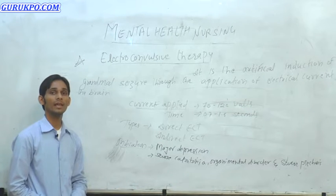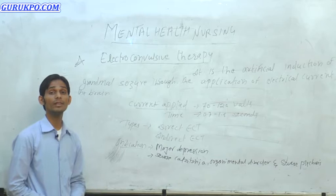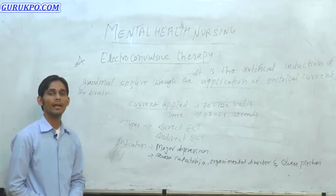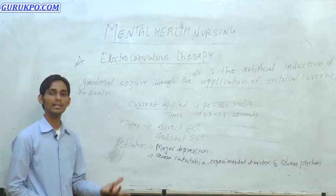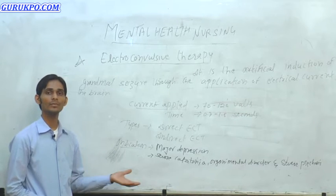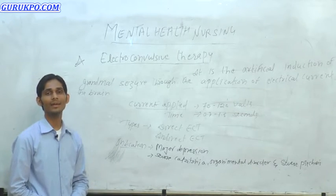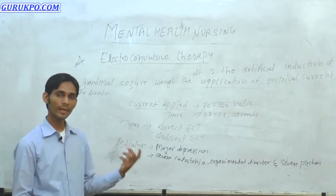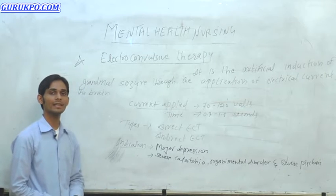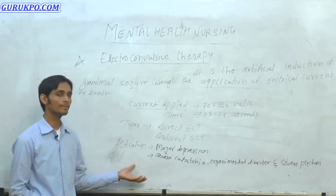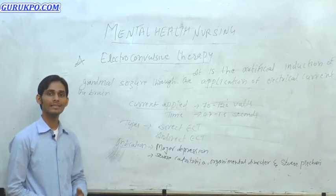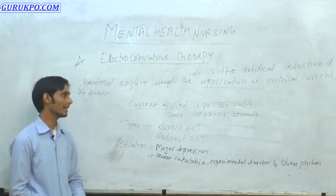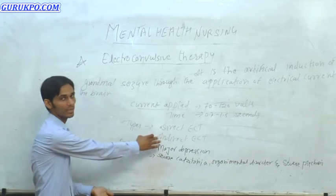Contraindications means the conditions in which we should avoid ECT. It is classified into two types: absolute and relative contraindications. The absolute contraindication is raised ICP — intracranial pressure. Relative contraindications include cerebral aneurysm and brain tumor. In such conditions we should not give ECT.